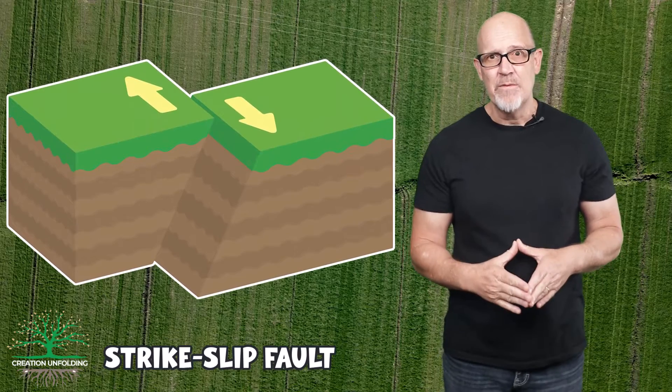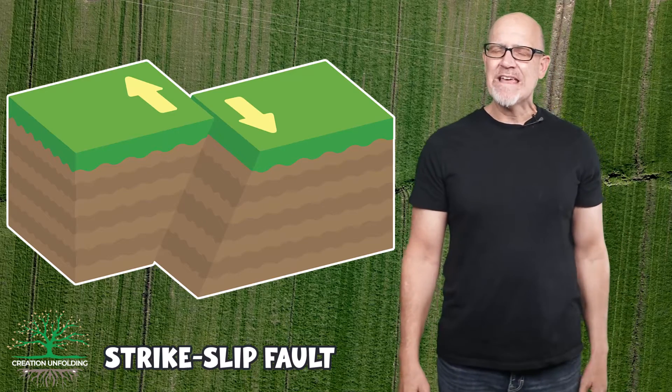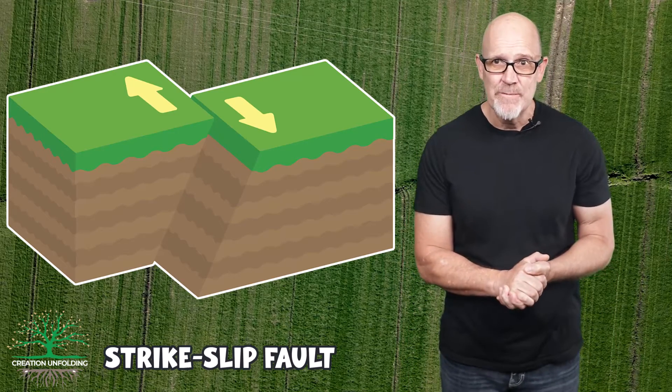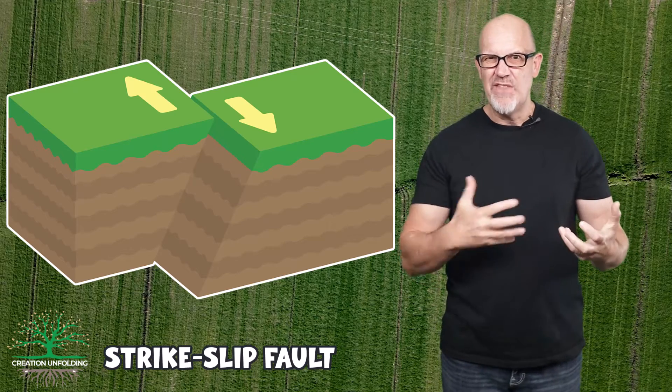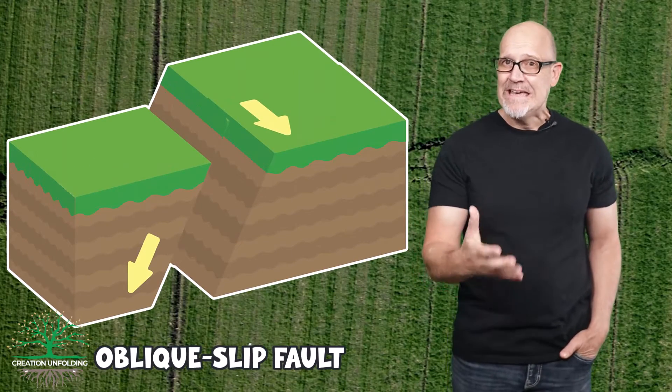Strike slip faults get their name because movement of either the foot wall or hanging wall is not vertical but occurs parallel to strike in a horizontal fashion. The San Andreas Fault is perhaps the most well-known strike slip fault in the world. The direction of movement depends on how the ground moves as seen by an observer on the opposite side of the fault — in this example, the ground moved to the left, making it a left lateral strike slip fault, regardless of which side the observer stands on. Oblique slip faults result when the slip direction is both vertical and horizontal.